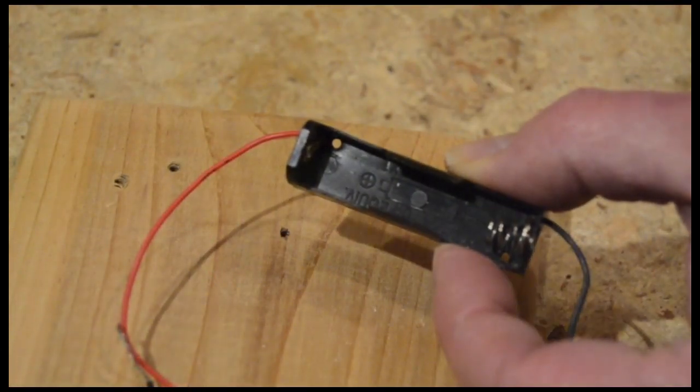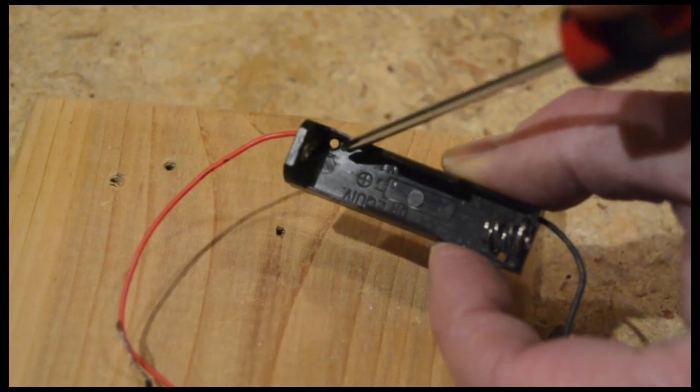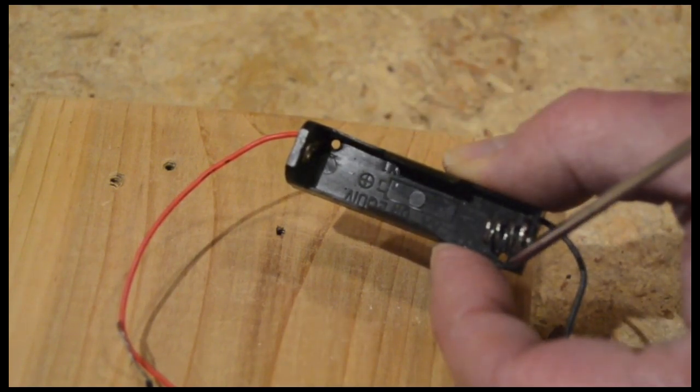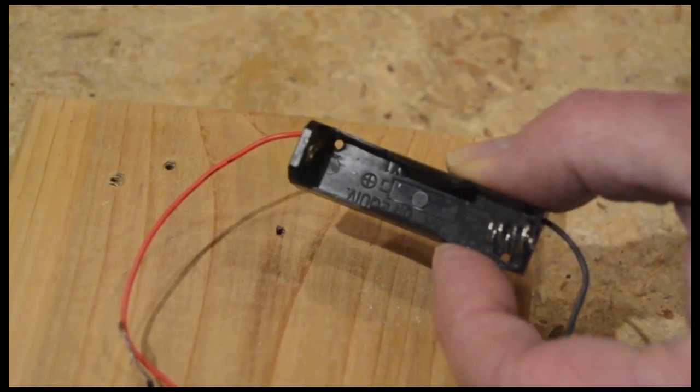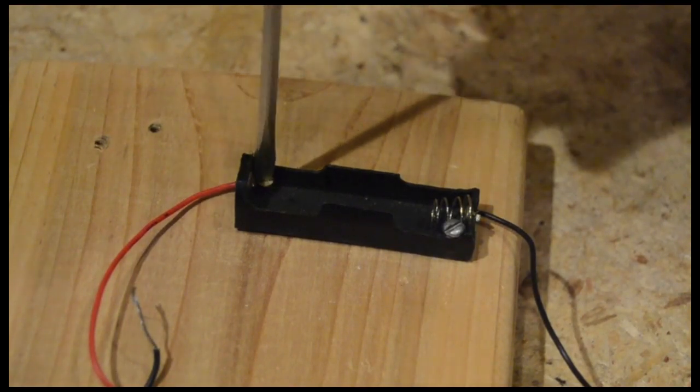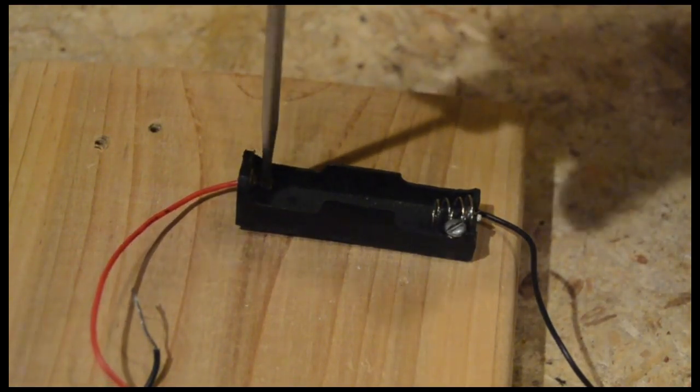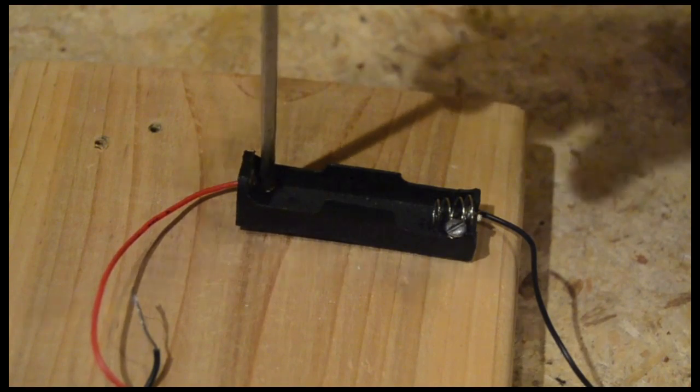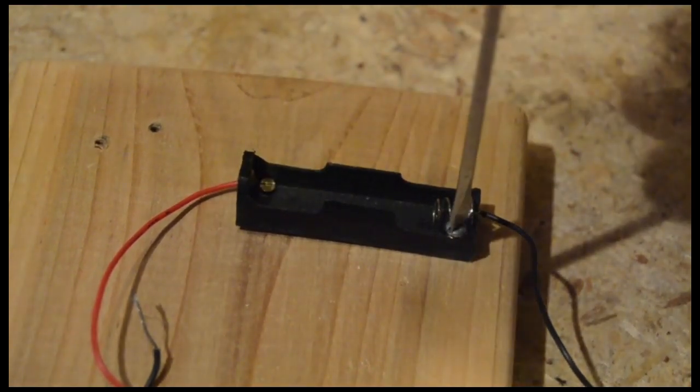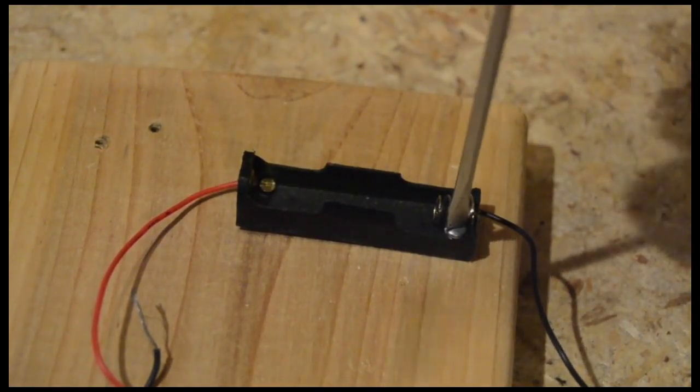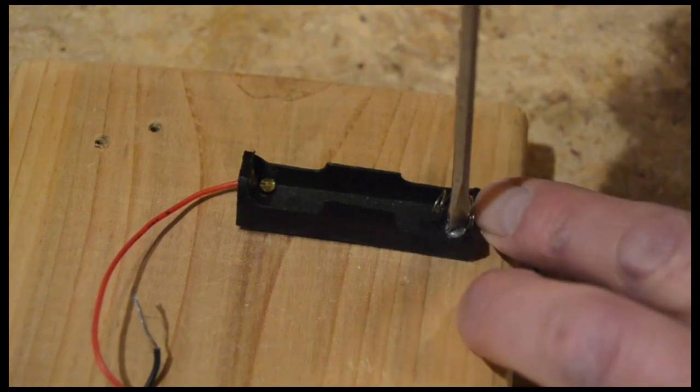This battery holder already has two holes to accommodate screws. If yours doesn't, you might be able to drill some. Screw the battery holder in place. Make sure the screw heads are tight to the base of the battery holder so they don't keep the battery from properly seating in the holder or keep the battery from connecting to the terminals.